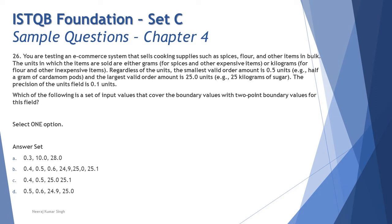The units are sold either in grams for expensive items like spices, or kilograms for flour and other inexpensive items. Regardless of units, the smallest valid order amount is 0.5 units, and the largest valid order amount is 25.0 units.